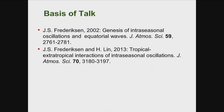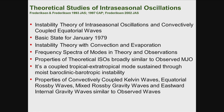Today my talk is based mainly on two papers. The first is by Frederiksen, 2002, on the genesis of the intra-seasonal oscillation and equatorial waves. The second paper is by Frederiksen and myself — we compared the theoretical waves with observations to see if there is consistency. Frederiksen's theory is the global instability of intra-seasonal oscillation and convectively coupled equatorial waves. Because it's a linear theory, they use a basic state from January 1979.